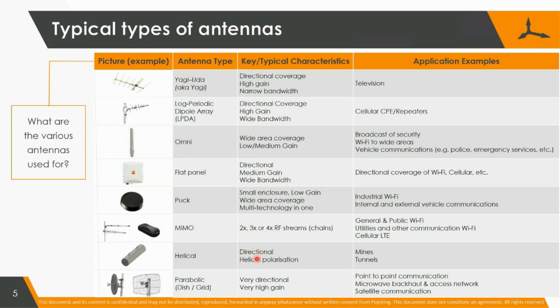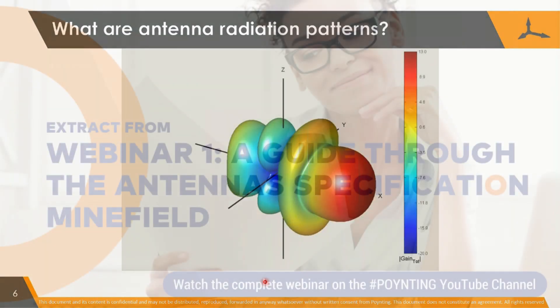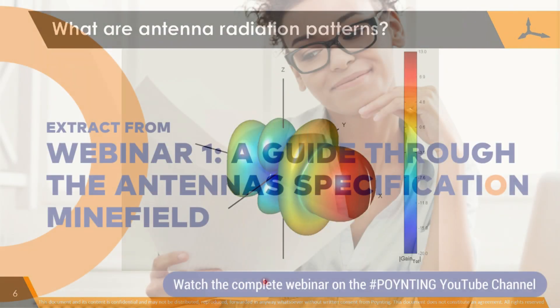Helical antennas are directional, mainly used in mines and tunnels. They have excellent propagation because they're circularly polarised. And we've got reflector antennas, which one commonly sees, but they're not often used for the whole cellular bands — quite often used in Wi-Fi communication.